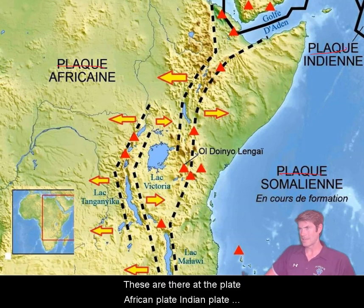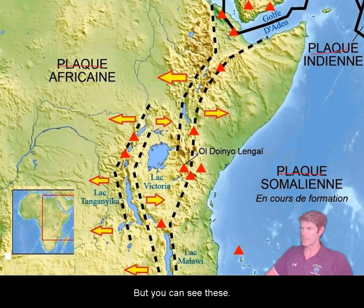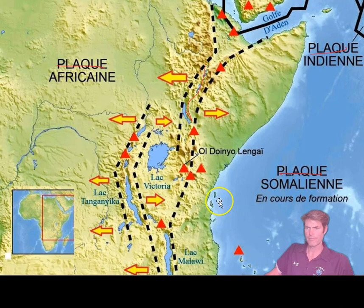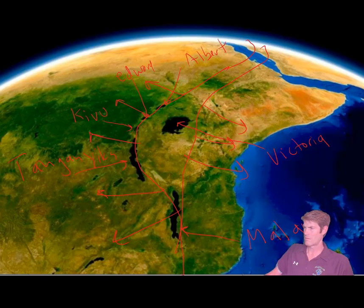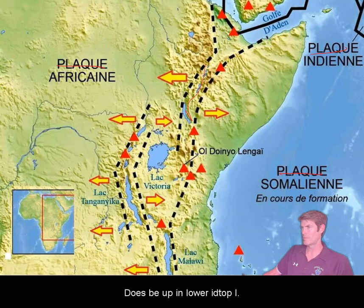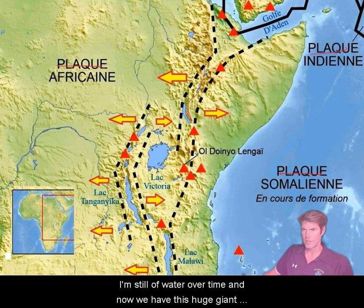These are the African plate, Indian plate, and Somalian plate. You can see the arrows showing the spread. There are some lakes up here too near Ethiopia. Those big cracks in the earth fill with water over time, and now we have those huge giant African lakes — but not for long. Give it a hundred million years or so.